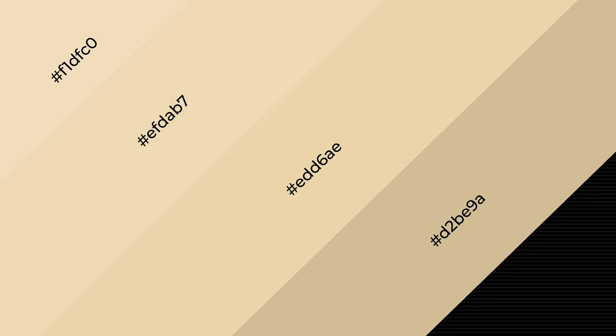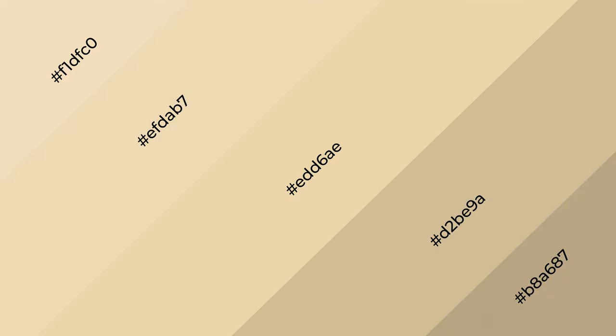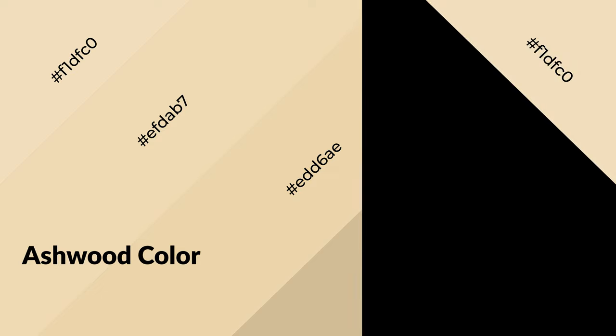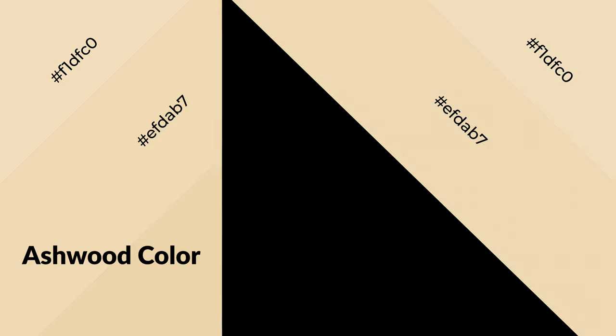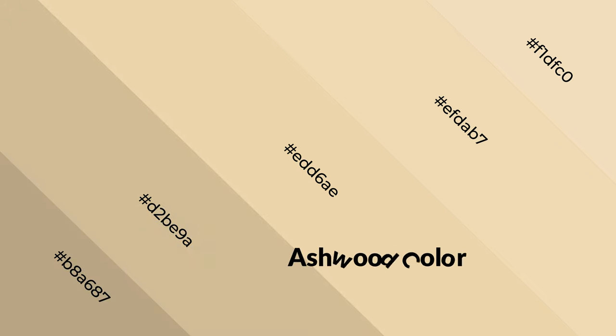Ashwood is a warm color and it emits cozier and active emotions. Warm colors are symbols of warmth, fire, heat, and sunshine. They also evoke joy, passion, love, and even anger. You can see them used in restaurants and gyms.